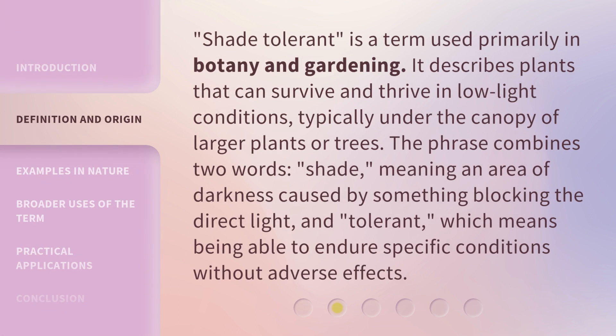Shade tolerant is a term used primarily in botany and gardening. It describes plants that can survive and thrive in low light conditions, typically under the canopy of larger plants or trees. The phrase combines two words: shade, meaning an area of darkness caused by something blocking the direct light, and tolerant, which means being able to endure specific conditions without adverse effects.